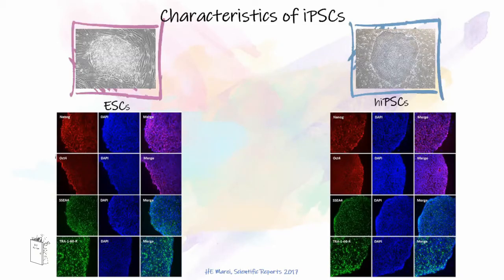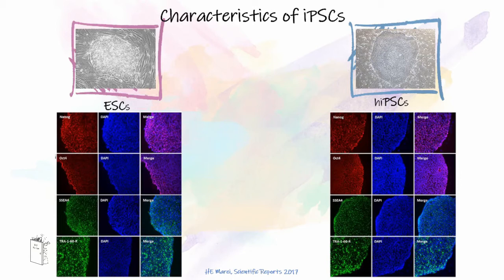iPS cells initially derived by Yamanaka, though clearly pluripotent, lacked several features of embryonic stem cells. For example, the endogenous pluripotency loci were not completely reactivated, suggesting a dependence on exogenous factors. However, these initial limitations have been overcome with improved derivation techniques, and human iPS cells have been proven to be molecularly and functionally highly similar to human embryonic stem cells with respect to expression of pluripotency markers and the potential to give rise to cells of all three embryonic germ layers in vitro and also in vivo.